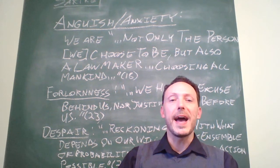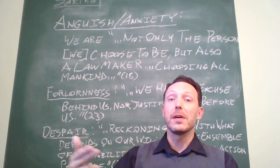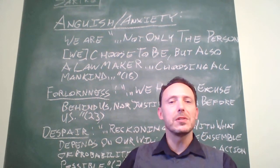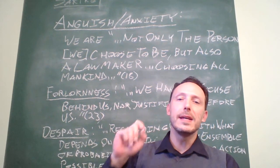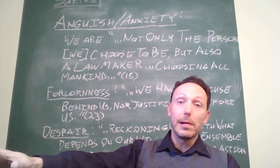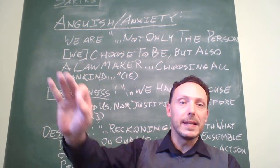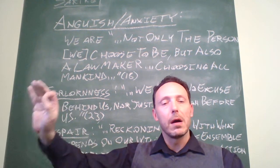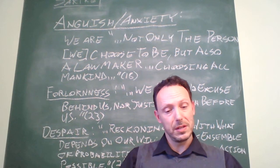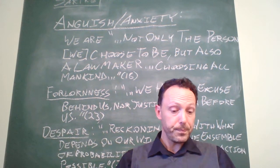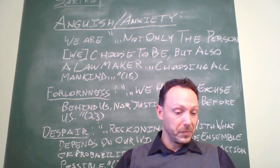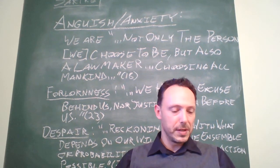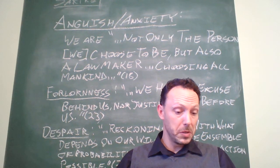When we choose and act, we define ourselves. And if this is the case, effectively in choosing ourselves, what we are doing is stating that all of humanity should guide itself by our actions. So he continues over on page 20, after using Abraham as an example.